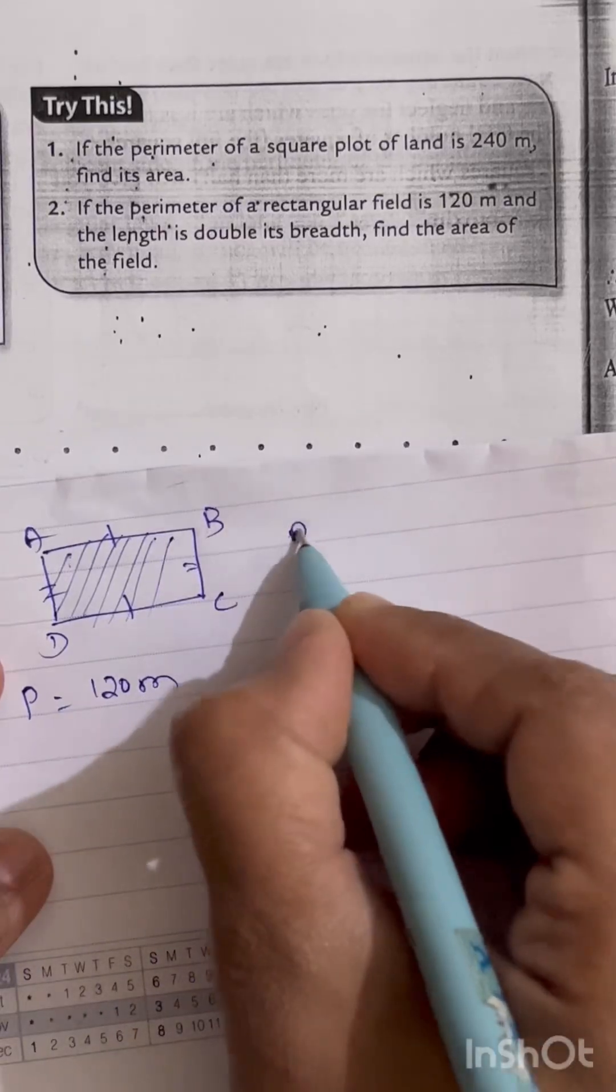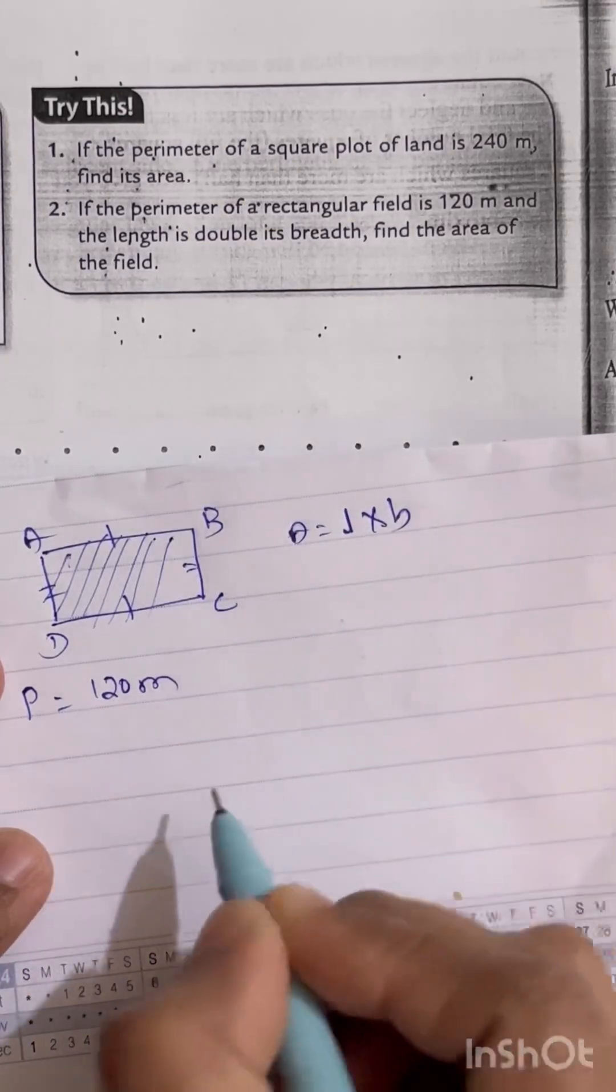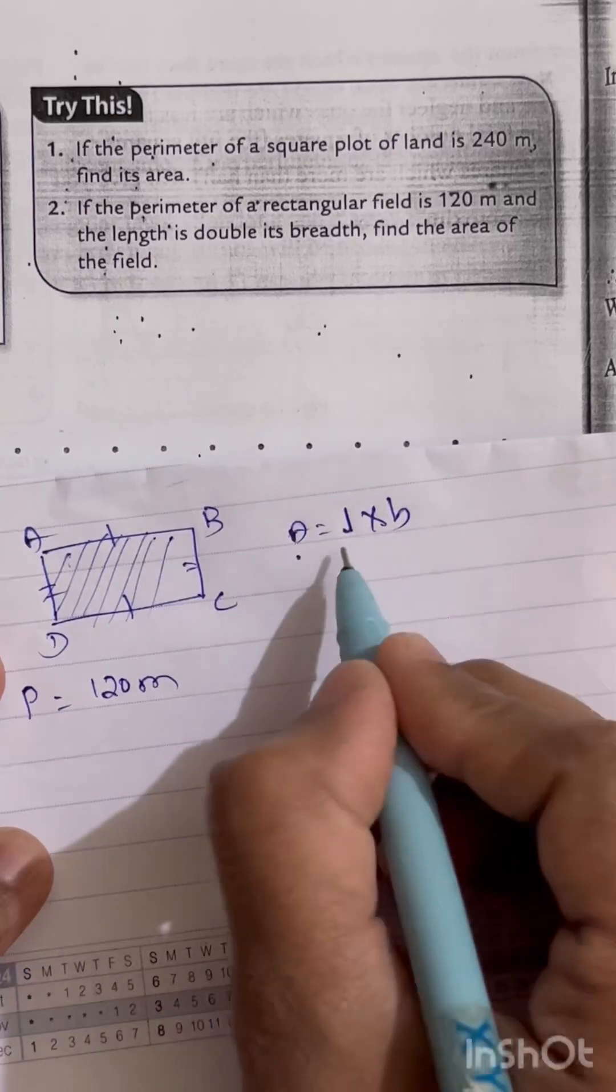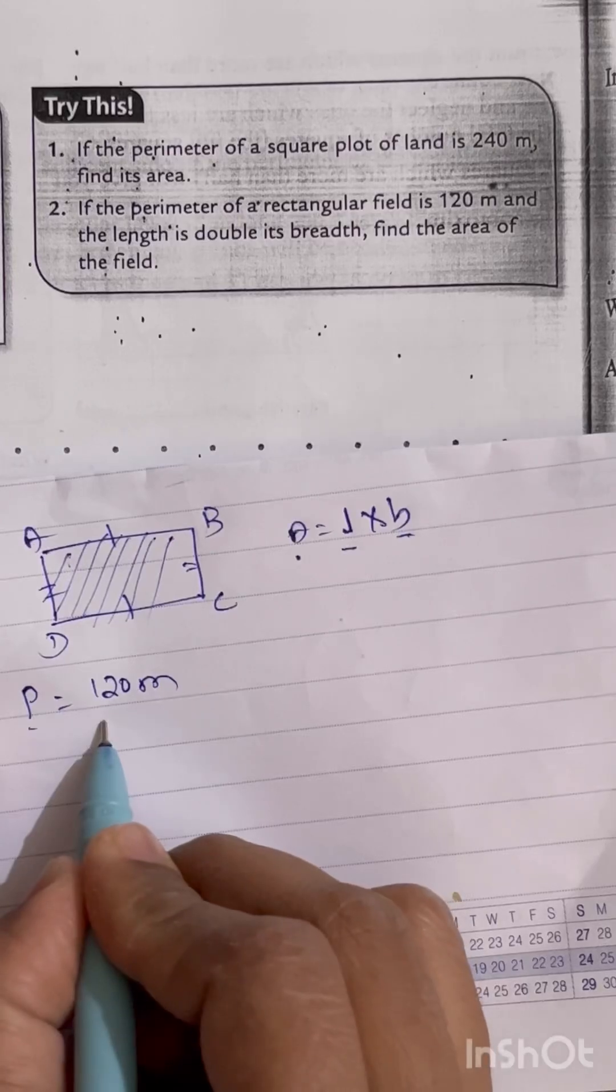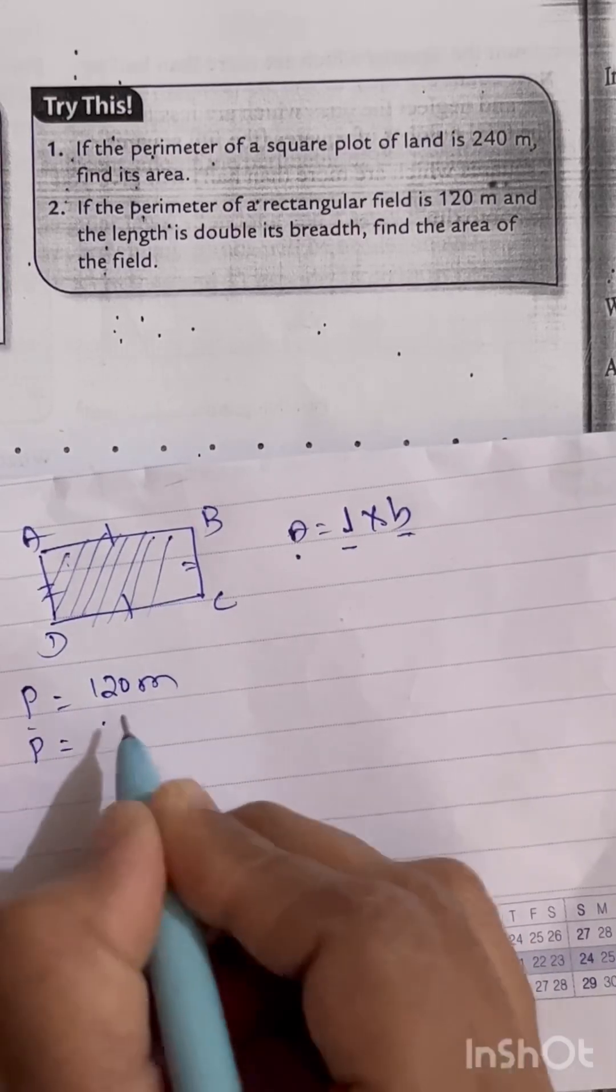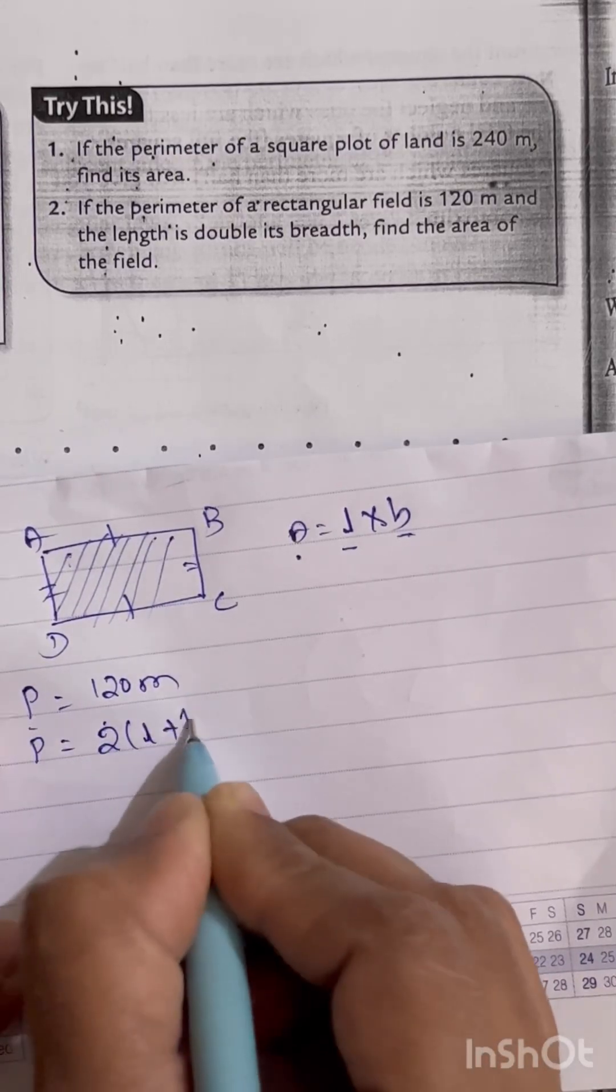Area equals—we have the formula—L into B. Now to find out the area, we don't know the length value or breadth value. But they have given the perimeter value here. So the perimeter formula is 2 in the bracket, L plus B.